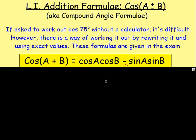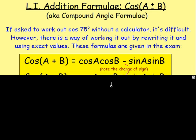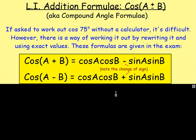So the first one is: if you have cos of A plus B, then that is the same as cos A cos B minus sin A sin B. Or if you have cos A minus B, that is the same as cos A cos B plus sin A sin B. And note here, there is a change of sign.